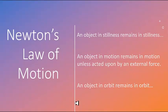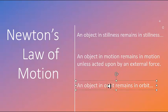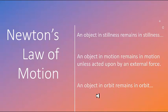So Newton's laws of motion — in my view there are three: an object in stillness remains in stillness unless acted upon by an external force; an object in motion remains in motion unless acted upon by an external force; and an object in orbit remains in orbit unless acted upon by an external force. That last one is important — a natural orbit is also an inertial frame. I do want to get into time dilation and clock retardation in future videos, since length contraction and clock retardation actually go hand in hand — you can't have one without the other.